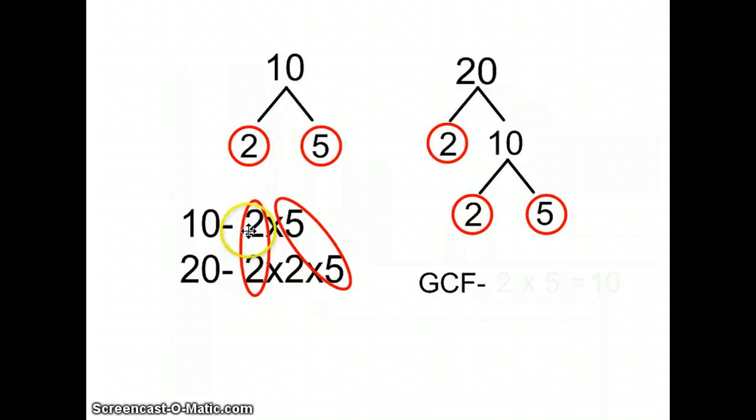What I mean by that is there's two twos right here, but next to greatest common factor, I'm only going to write it once. If there were not any other numbers circled, then this number would be your greatest common factor.